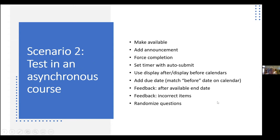Second scenario: asynchronous course — students taking it on their own time. I have bigger issues about test security here. Start with Make Available. Right underneath that is Generate an Announcement — I want an announcement to go out saying there's a new test. I do Force Completion, the timer with Auto Submit. I also use the display calendars — there's a Display After and Display Before option. Display After is when the test becomes available; Display Before is when it stops being available. You're setting a window.